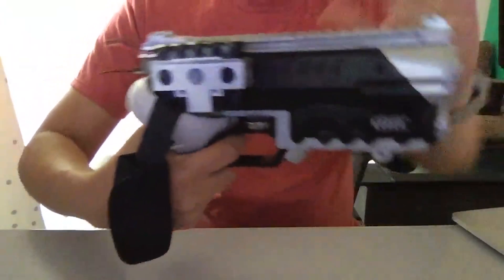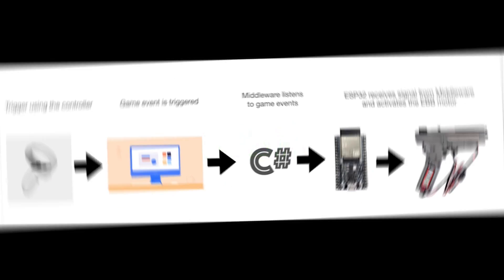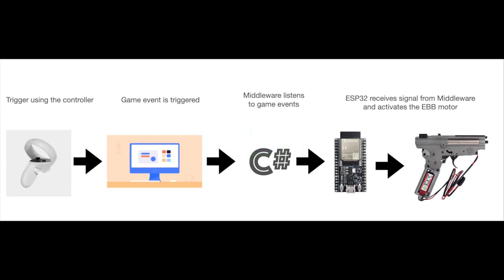The handgun is basically an attachment for the basic Oculus Quest controller. When the player pulls the trigger, that makes the action happen in the game. Then some middleware intercepts the signal, which sends a trigger to the ESP32 that's in the handgun, which then activates the haptic interaction from the electric blowback motor.